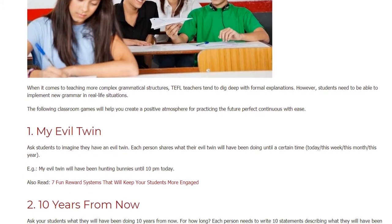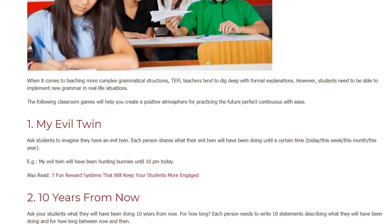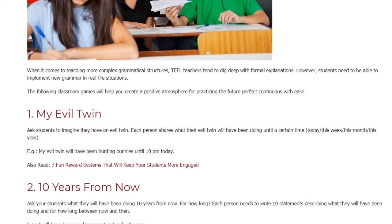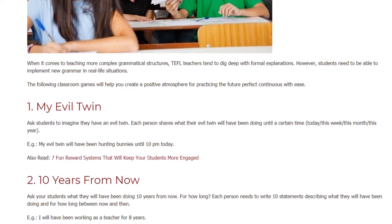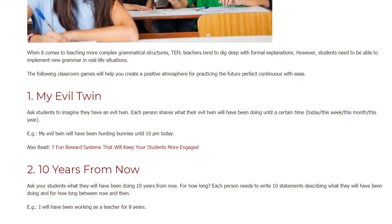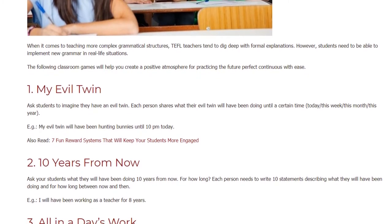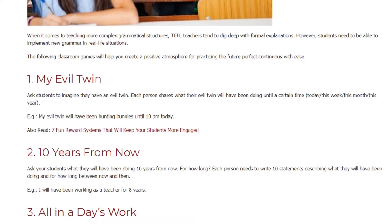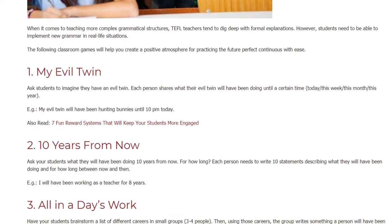Activity 2: 10 Years From Now. Ask your students what they will have been doing 10 years from now, and for how long. Each person needs to write 10 statements describing what they will have been doing and for how long between now and then. For example, I will have been working as a teacher for 8 years.